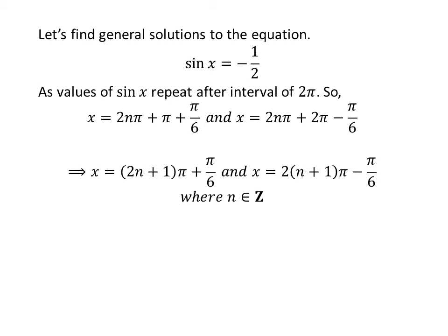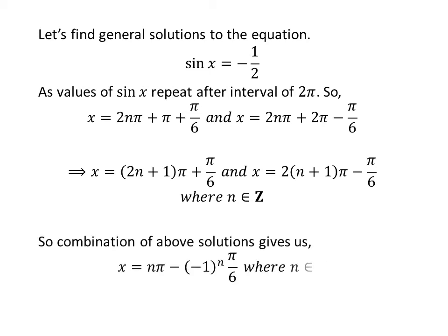Further simplification gives us the general solutions as 2 times n plus 1 times pi plus or minus pi upon 6. Since 2 times n plus 1 is an odd integer for any n, and the union of these two sets is the set of integers, and since minus 1 raised to the power of n is minus 1 if n is odd and plus 1 if n is even, the general solution is n times pi minus minus 1 raised to the power of n times pi upon 6, where n is an integer.